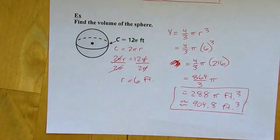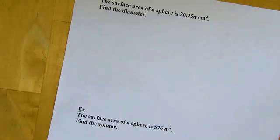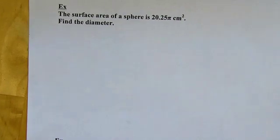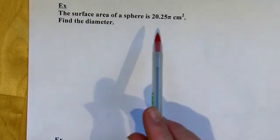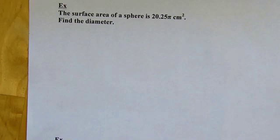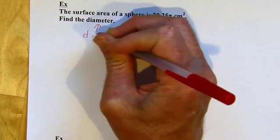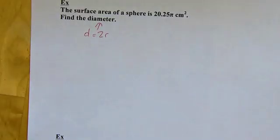Alright. And on to the last page. So this time we're given the surface area of a sphere. It's given to us. There's no picture here. But we've got the surface area of a sphere. And we want to find the diameter. So again, on all of these sphere problems, the radius is always the key. Because if I know the radius, then I can find the diameter. It's just double the radius.